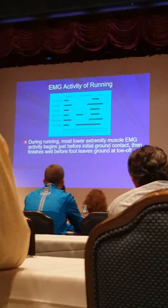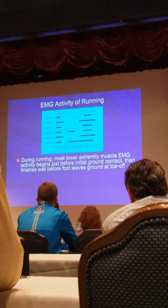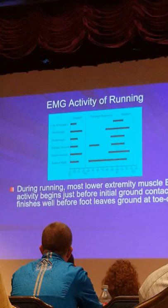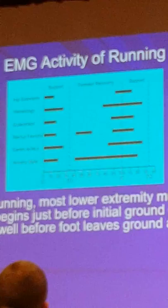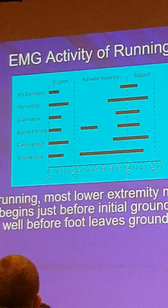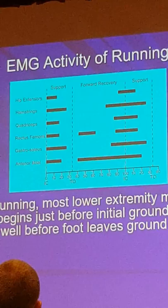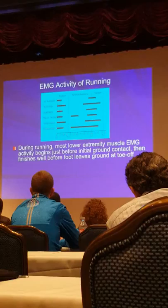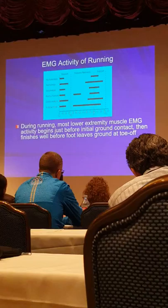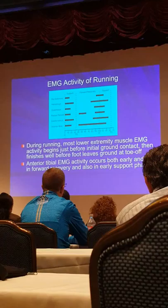Looking at the graphs: here's the beginning of initial contact, showing hip extensors, hamstrings, quadriceps, rectus femoris, gastrocnemius, and anterior tibialis. The gastrocnemius is actually firing well ahead of contact. The rectus femoris, quadriceps, hamstrings, and hip extensors are firing well before we hit the ground because they're preparing for the impact — getting ready for the impact with the ground and then to push off. The anterior tibialis is active nearly the whole running gait cycle.